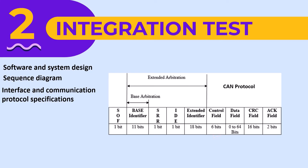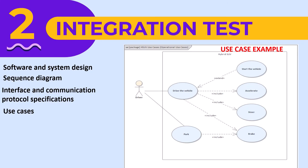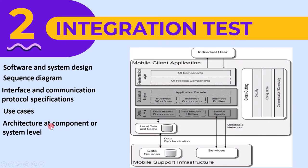To check if data is sent and received as expected. The fourth requirement for integration testing is use cases. Using a use case diagram, one can know how the feature will be used. If we know how the interfaces are going to be used by the user, we can prepare better integration test cases. The fifth requirement is architecture at the component or system level.